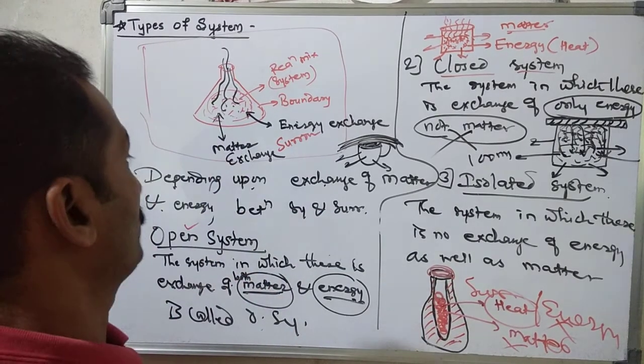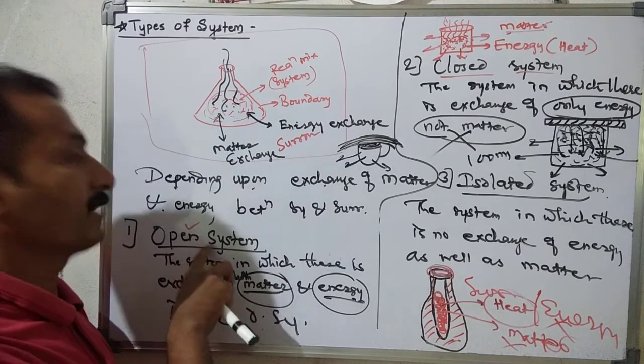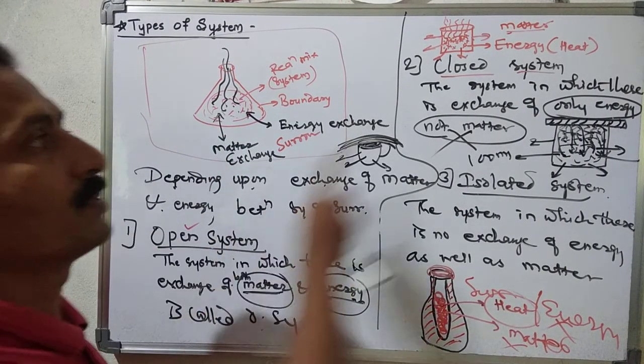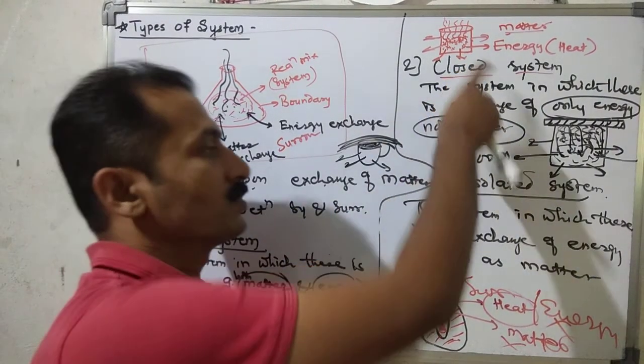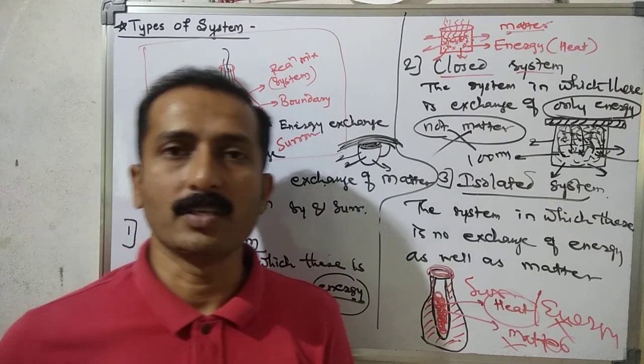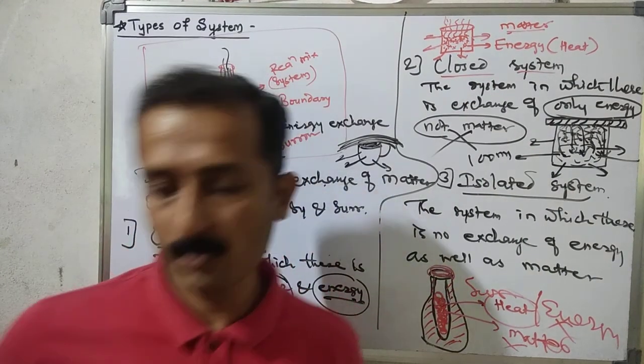So there are three types of system: open system, closed system, and isolated system. Thank you.